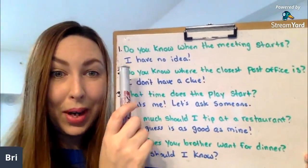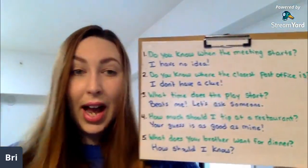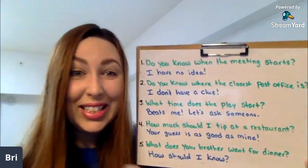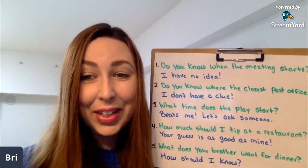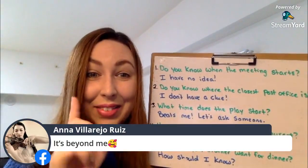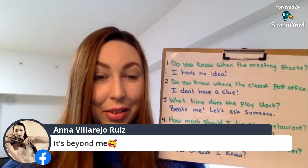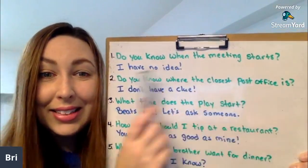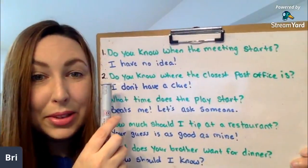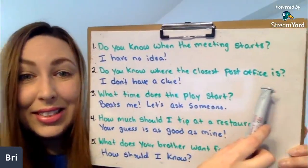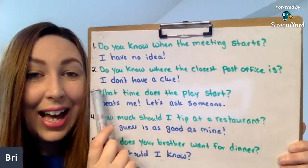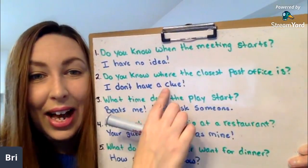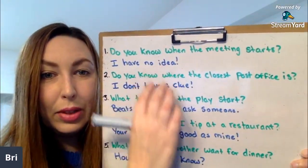Number one: 'Do you know when the meeting starts?' — you're at work asking your colleague, and they say 'I have no idea.' A student also mentioned 'it's beyond me' — yes, sometimes we say that too when we don't know. Number two: 'Do you know where the closest post office is?' — 'I don't have a clue' or 'I haven't the faintest idea.'